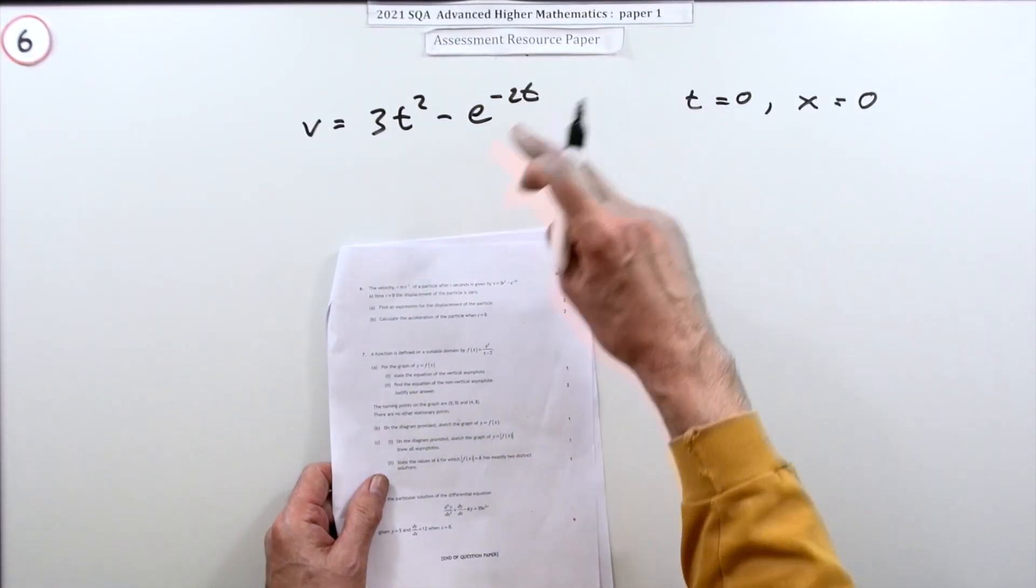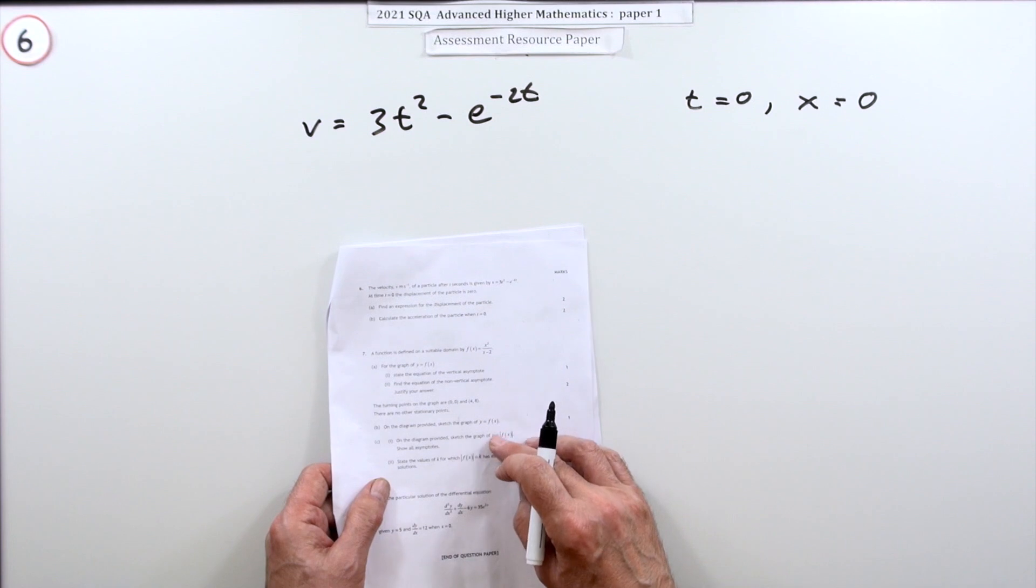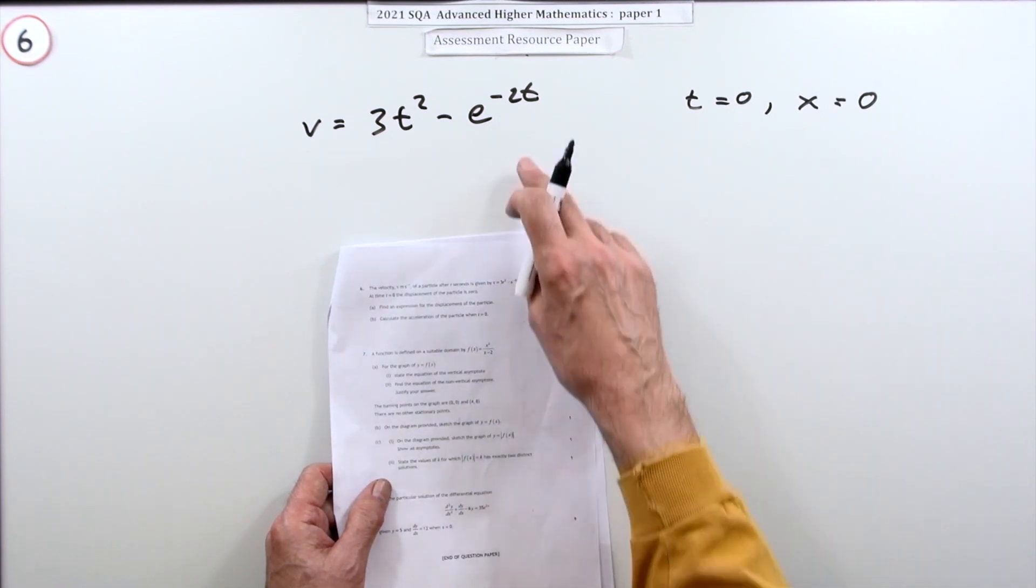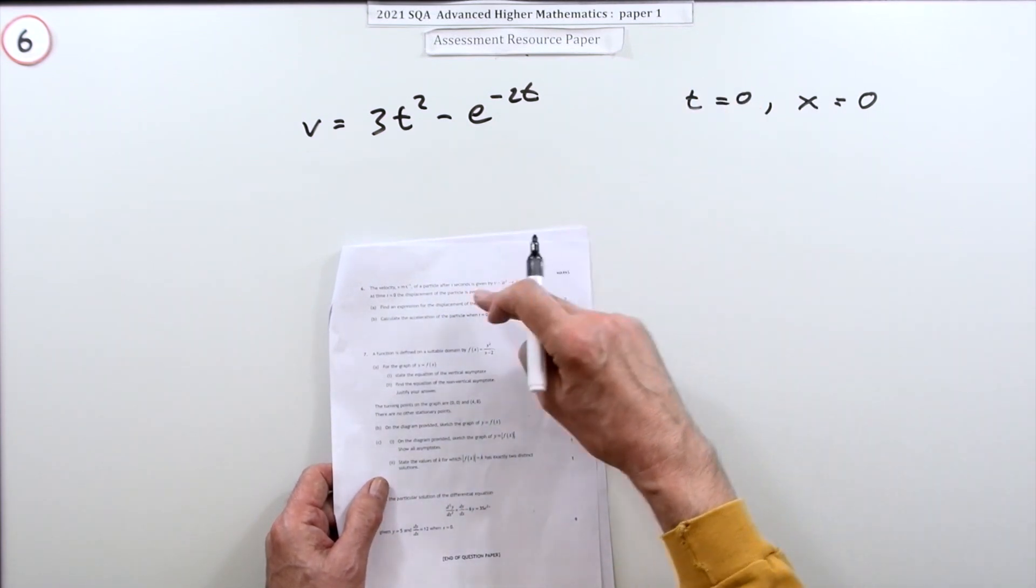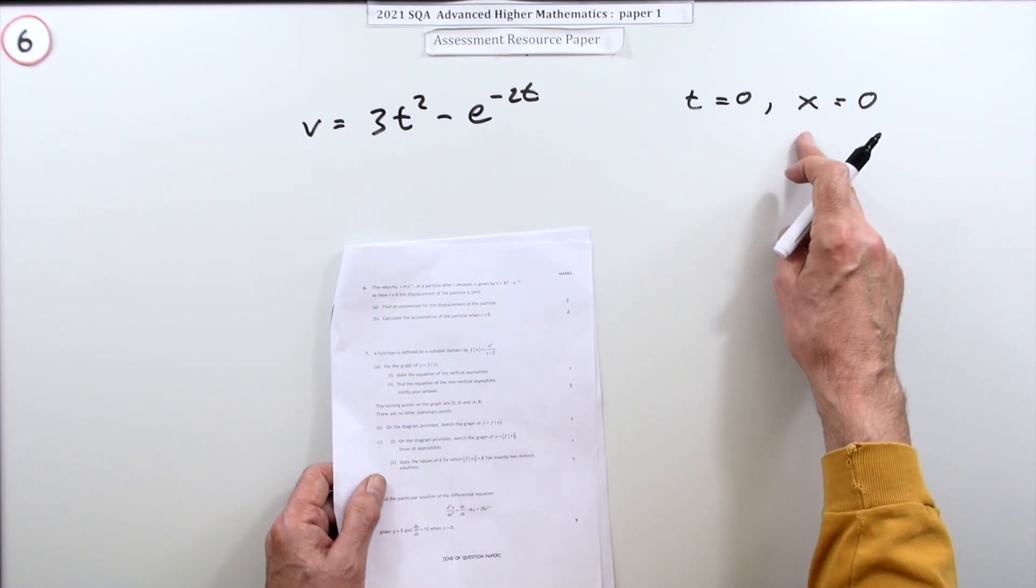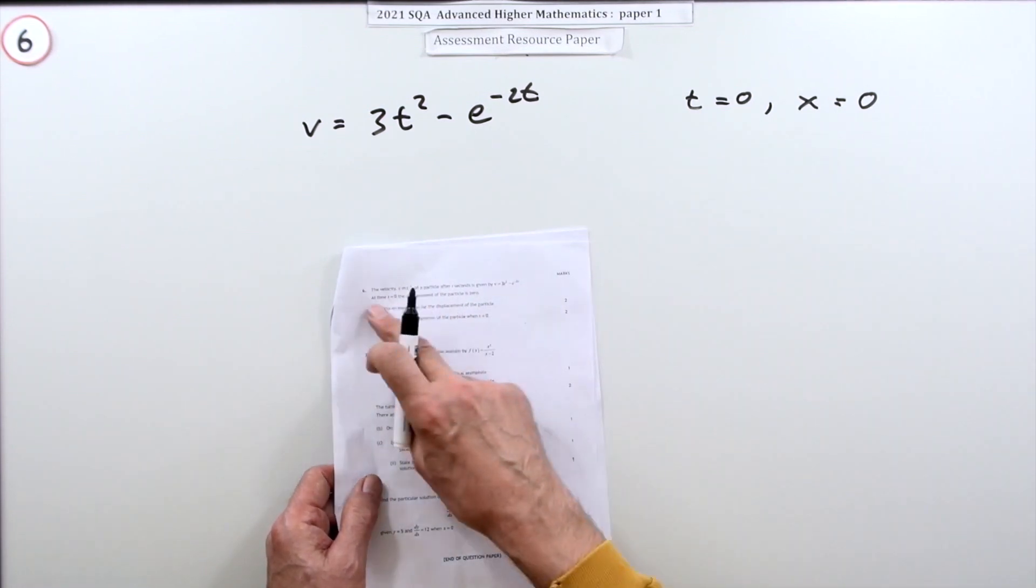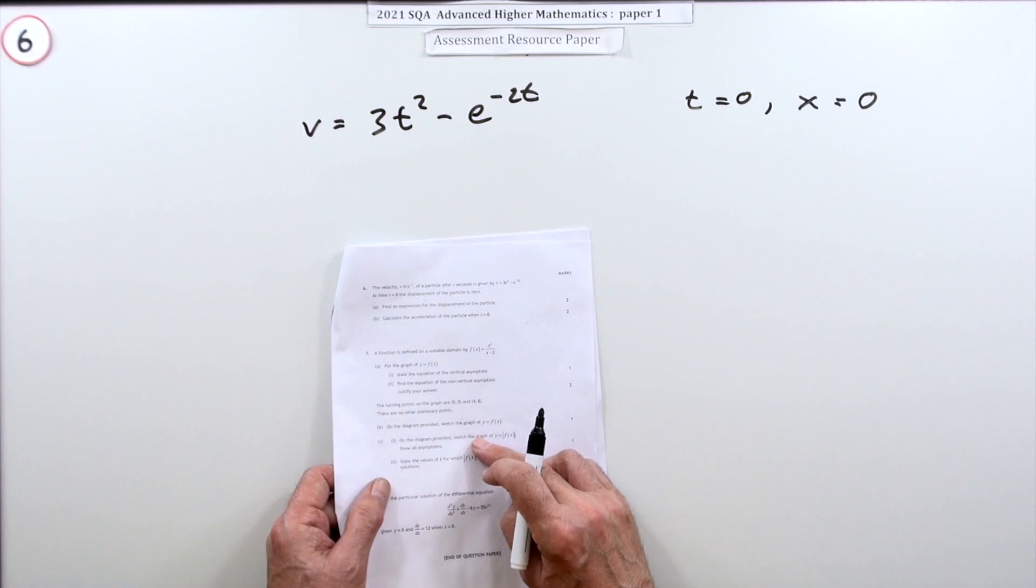Question six from paper one of the 2021 Advanced Higher Maths resource paper. Four marks. The question involves acceleration, velocity, and displacement. I'm choosing letter x here because they didn't give me one to use.